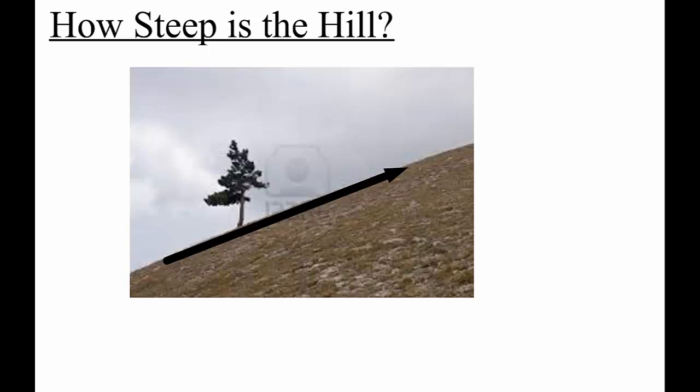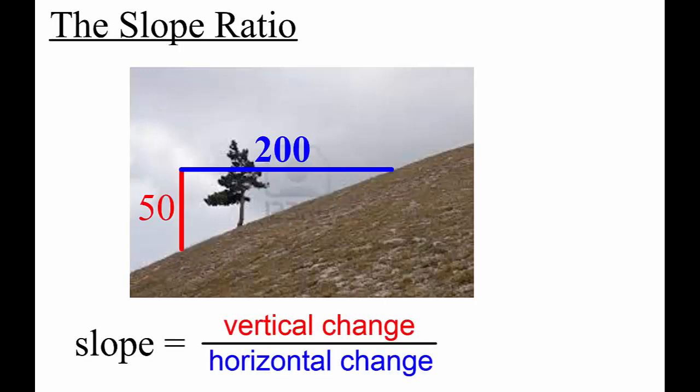To measure steepness, we can draw a slope triangle that connects two points on a line. Here's a hill with a positive slope. A slope triangle helps us visualize slope by showing the vertical change and the horizontal change between two points.